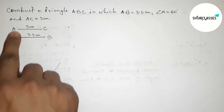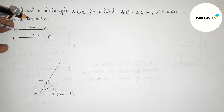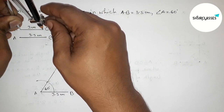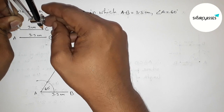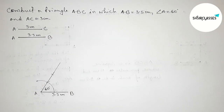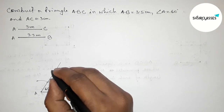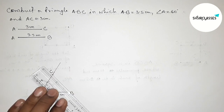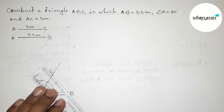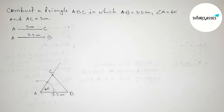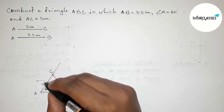Next, taking the length AC equals 3 centimeters. Putting the compass on point A and cutting an arc along the 60 degree angle ray at 3 centimeters. Now taking point C there, and joining side BC to get triangle ABC. So AC equals 3 centimeters.